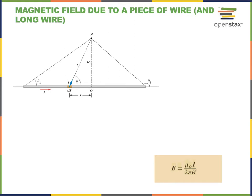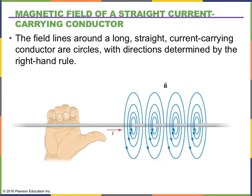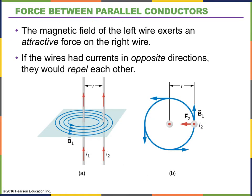We looked at the magnetic field due to a long piece of wire, and I wanted to review this because we're going to use it today. The magnetic field is proportional to the current but drops off as 1 over R. The magnetic field created by a wire is given by the right-hand rule and makes circles around the wire. You determine the direction by placing your thumb in the direction of the current, and your fingers wrap around in the direction of the magnetic field.